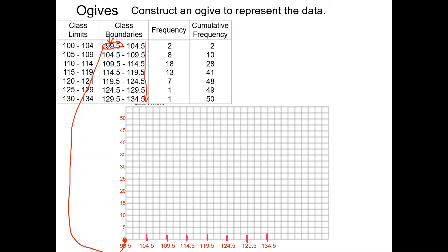And so then we have to plot our points. So remember, whatever lands here is what we're plotting for cumulative frequency. So if I look at my tick mark at 104.5, I'm going up 2. If I look at my tick mark at 109.5, I'm going up 10. And then at 114.5, I'm going up 28. 119.5, I'm going up 41. And then I'm going up 48 for above 124.5, and then 49 and 50.